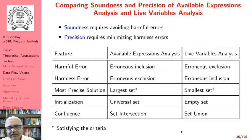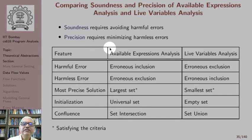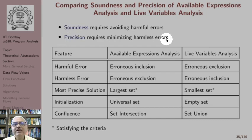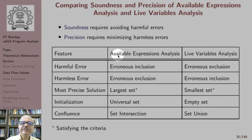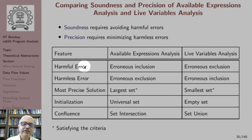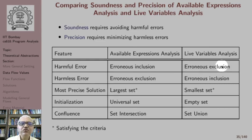We summarize our findings: soundness requires avoiding harmful errors and precision requires minimizing harmless errors. For available expressions analysis, erroneous inclusion — marking an expression as available when it is not — is a harmful error. Erroneous exclusion — missing an expression which is actually available — is a harmless error. The situation is exactly opposite in live variables analysis: erroneous exclusion is a harmful error, whereas erroneous inclusion is a harmless error.